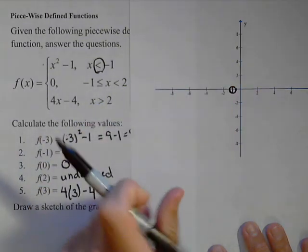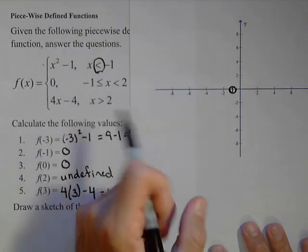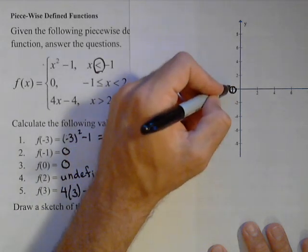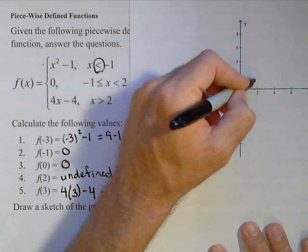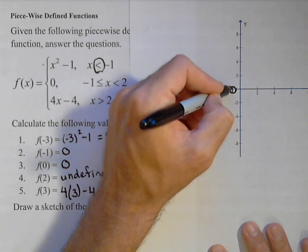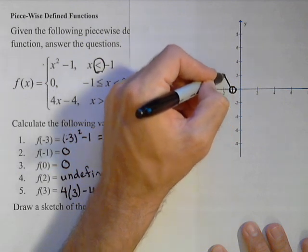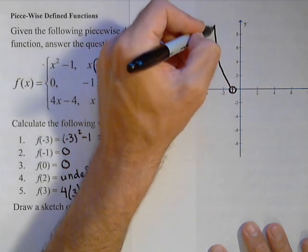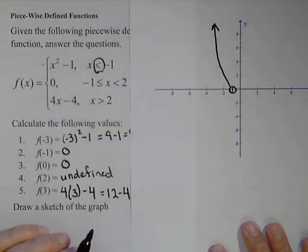and then to the left, because it's less than, my graph looks like a quadratic. X squared minus one would be the quadratic with a vertex at zero, negative one, and then going back up with a quadratic looking piece there. All right, so that's our first piece.